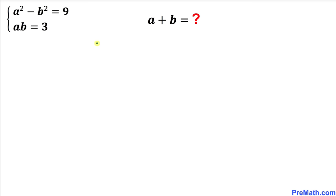In this video we have this system of equations: a squared minus b squared equals 9, and a times b equals 3. We are going to find the value of a plus b.